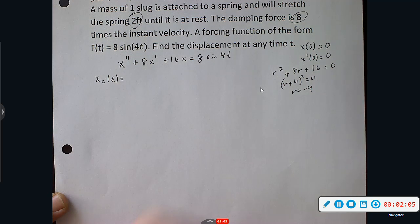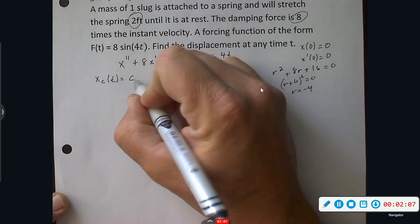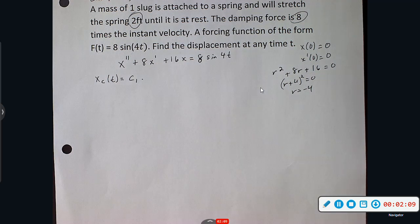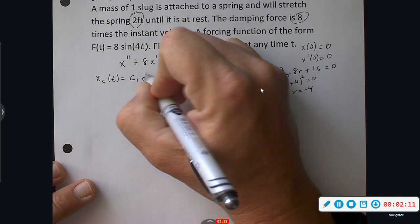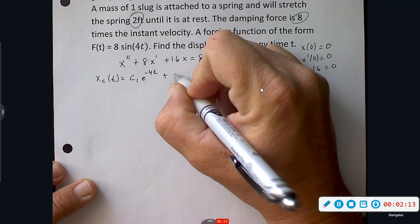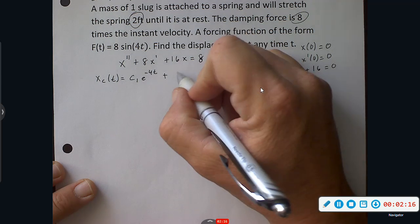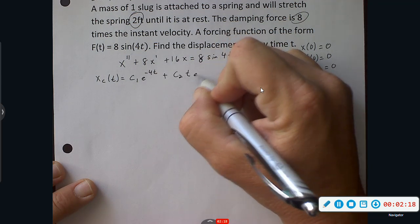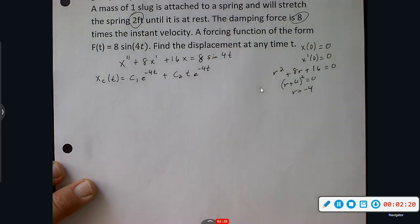It is going to be C1 times e to the negative 4T, and then again, because the R value is the same, we add a T. Alright, there's our Xc(T).